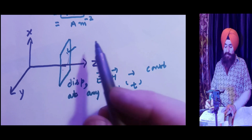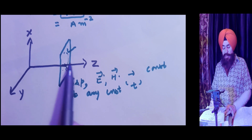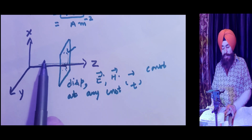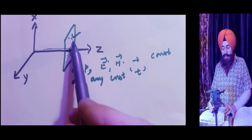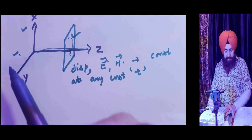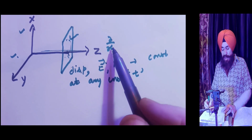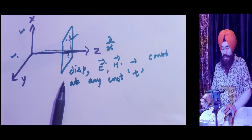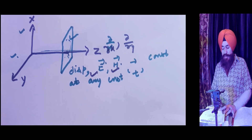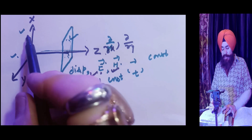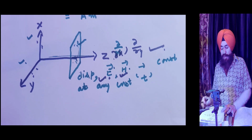At any time T, over the wavefront, E, H, and displacement are all constant, because the wave is propagating along Z. This means the wavefront lies in the XY plane. Therefore, the variation of these parameters with respect to X and Y — that is, ∂/∂X and ∂/∂Y of these quantities — equals zero at any instant T.